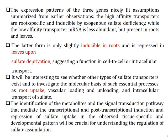The expression patterns of the three genes fit assumptions summarized from earlier observations. The high-affinity transporters are root-specific and inducible by exogenous sulfate deficiency, while the low-affinity transporter mRNA is less abundant but present in roots and leaves. The low-affinity form is only slightly inducible in roots and is repressed in leaves upon sulfate deprivation, suggesting a function in cell-to-cell or intracellular transport.